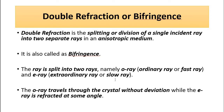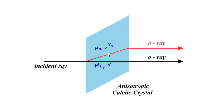The ordinary ray or O ray is called the fast ray, traveling at higher velocity, while the extraordinary ray or E ray is the slow ray, traveling at lower velocity. The O ray travels without any deviation, and the E ray suffers normal refraction at both interfaces.